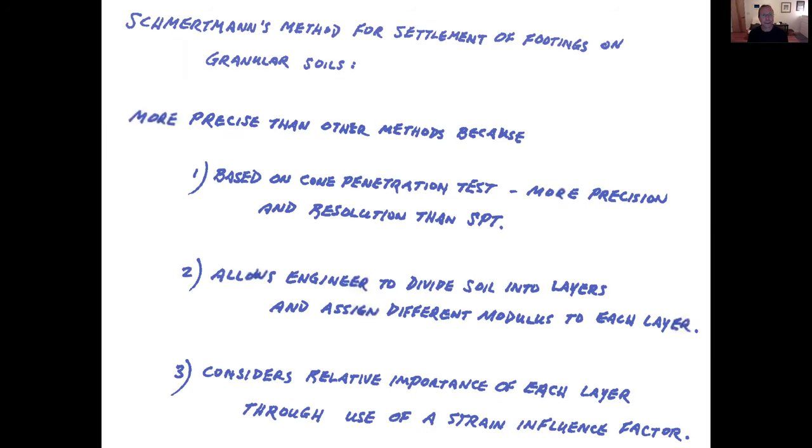Schmertmann's method for settlement of footings on granular soils is more precise than other methods because it is first off based on the cone penetration test, which has quite a bit more precision as well as resolution than the standard penetration test. It also allows the engineer to divide the soil into layers and assign a different modulus to each layer, and that's rather helpful. It considers the relative importance of each layer through use of a strain influence factor.